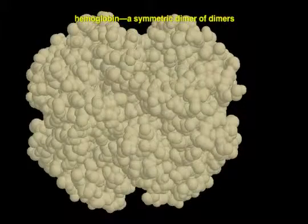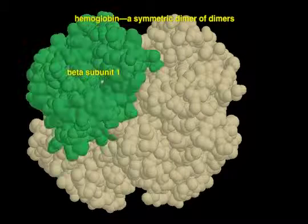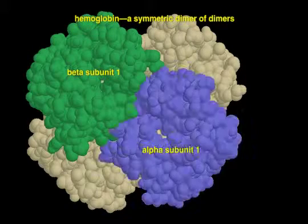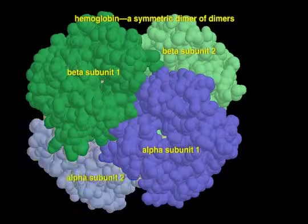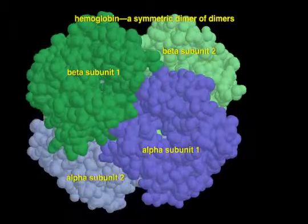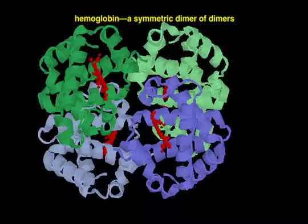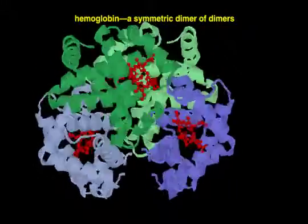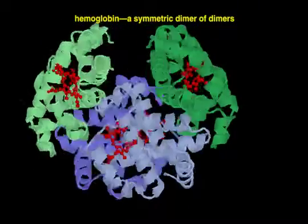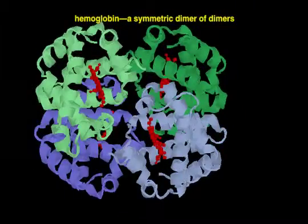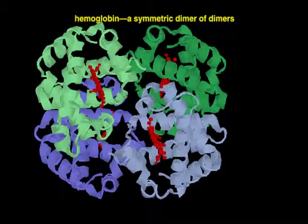Hemoglobin is a tetrameric protein that transports oxygen. It is composed of two alpha subunits and two closely related beta subunits. Oxygen binds to heme groups in the protein, which are shown in red. Each subunit can sense whether neighboring subunits contain bound oxygen. The protein subunits therefore communicate with one another through the interfaces that hold them together.